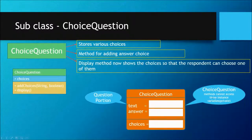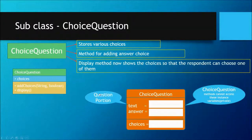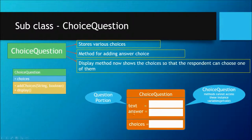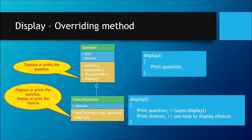Keep in mind that the ChoiceQuestion methods cannot access the instance variables 'text' and 'answer' directly, because they are set as private in the Question superclass. But that doesn't mean we can't access them at all — we can access them through the superclass methods. We use the superclass methods setText() and setAnswer() to work with those two values.